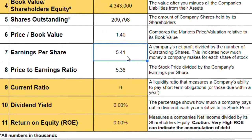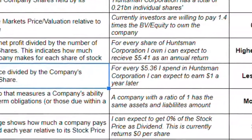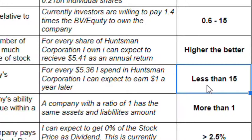Item eight is the price-to-earnings ratio — the stock price divided by the earnings per share. We get a number of 5.36, which tells us that for every $5.36 we spend in Huntsman, we can expect to earn $1 a year later. The lower the number, the better, and the guidance is to have a price-to-earnings ratio of less than 15. Again, Huntsman passes.